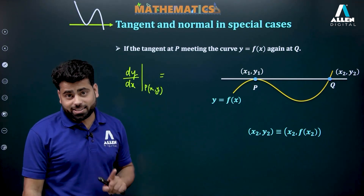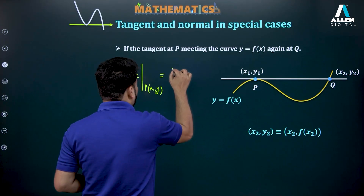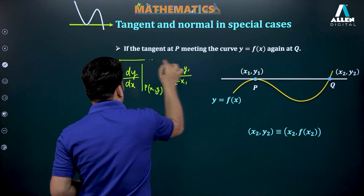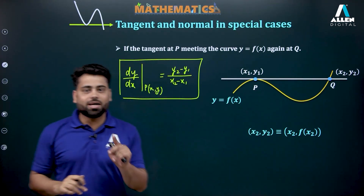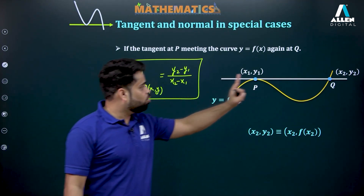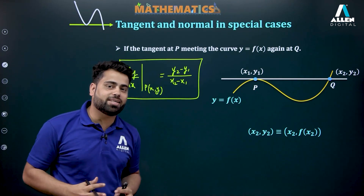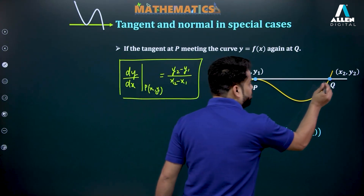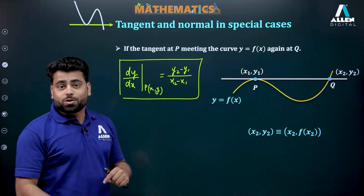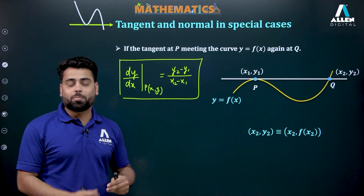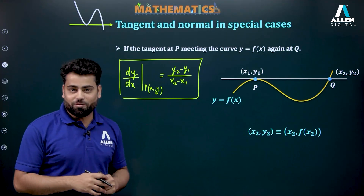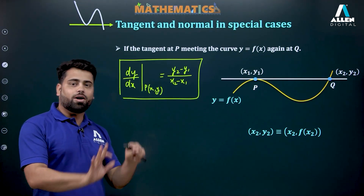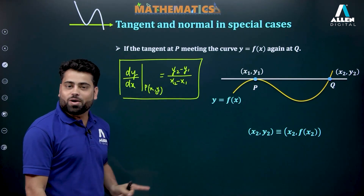That slope equals dy/dx at P, and the same slope has to equal (y₂ - y₁)/(x₂ - x₁) using the concept of straight lines — whether you write slope by dy/dx or by (y₂ - y₁)/(x₂ - x₁), both are the same. One more thing: point Q is also lying on the curve, so I can satisfy this point on the curve to get one more equation. In the next case you will see the point is not lying on the curve.